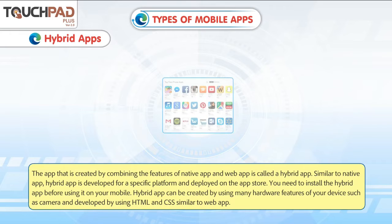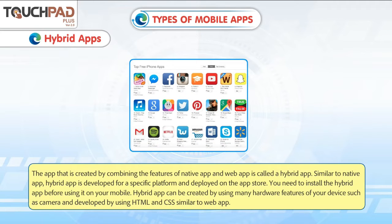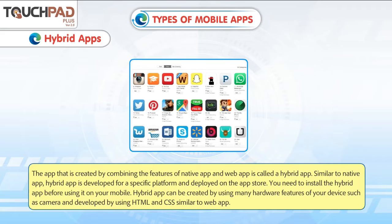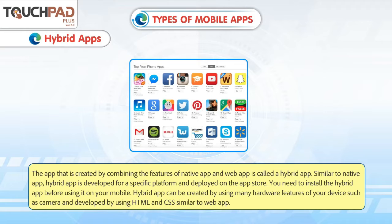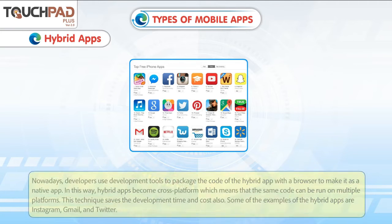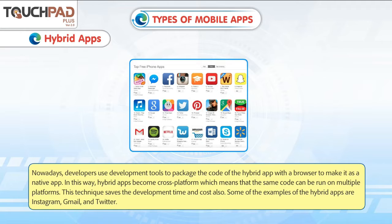Hybrid Apps. The app that is created by combining the features of a native app and a web app is called a hybrid app. Similar to a native app, a hybrid app is developed for a specific platform and deployed on the app store. You need to install the hybrid app before using it on your mobile. Hybrid apps can be created using many hardware features of your device such as the camera, and developed using HTML and CSS similar to a web app. Developers use development tools to package the code of the hybrid app with a browser to make it a native app.